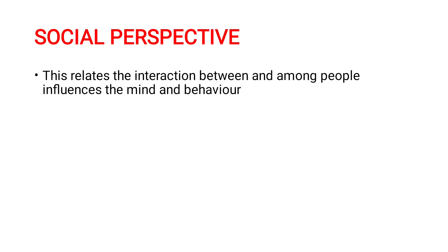Social perspective: Man is a social animal. In the social perspective, how we interact with others influences our mind and behavior. How a person mingles with others, how he gets along and moves with others — the interaction between and among people influences the mind and behavior of the person. This is what is dealt with in the social perspective.